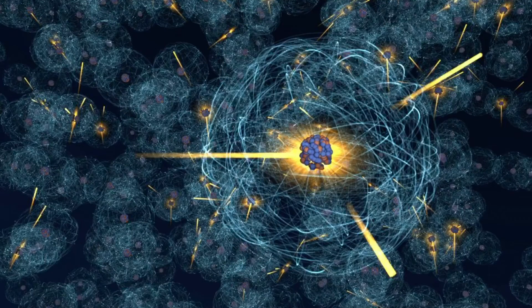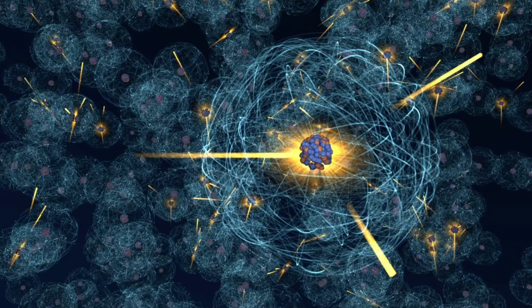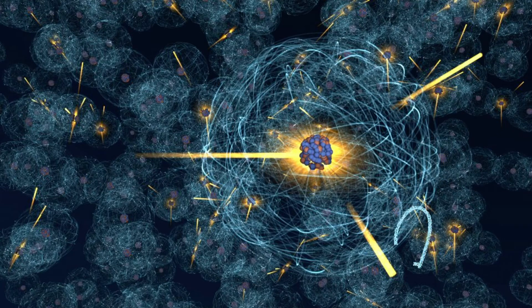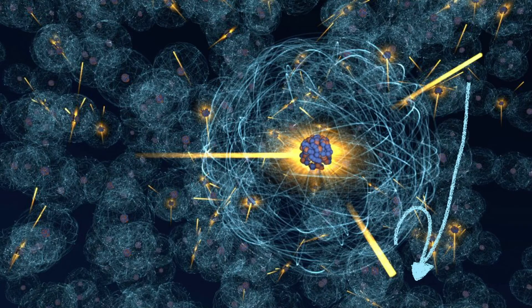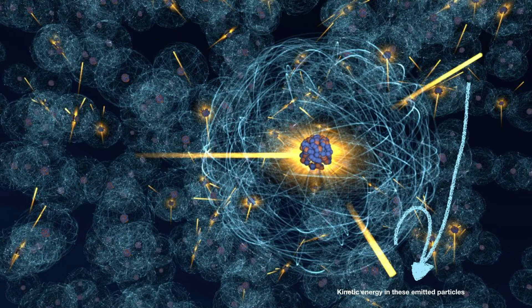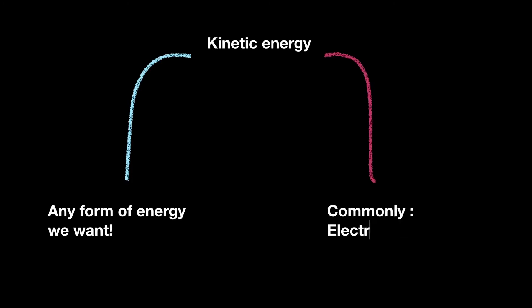A huge amount of energy is released when this process occurs. This energy is present in the radiated particles and the newly formed atoms in the form of kinetic energy. This kinetic energy, due to the motion of the particles, can then be transformed into any other form of energy. In most cases, it is finally transformed into electrical energy.